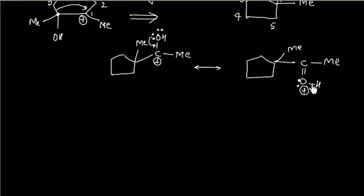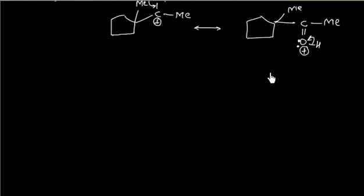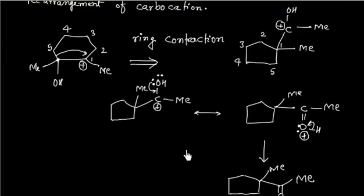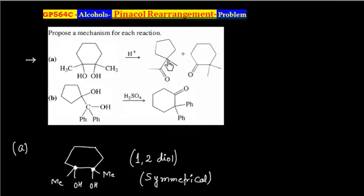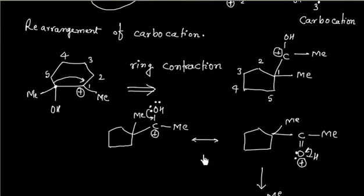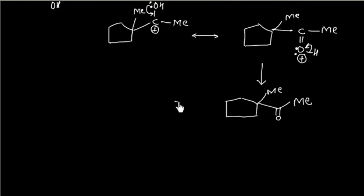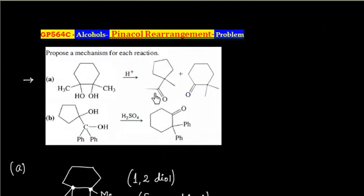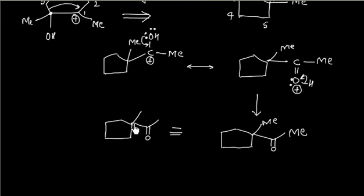In the next step we can lose H⁺, so H⁺ is acting as a catalyst. We will get the desired product: methyl, C=O, methyl — that is the 5-membered ring product. This product can also be written equivalently as a line diagram showing the 5-membered ring with methyl, C=O, methyl.